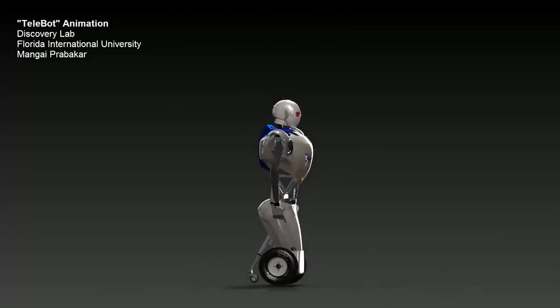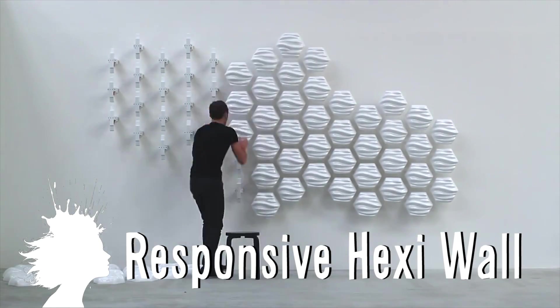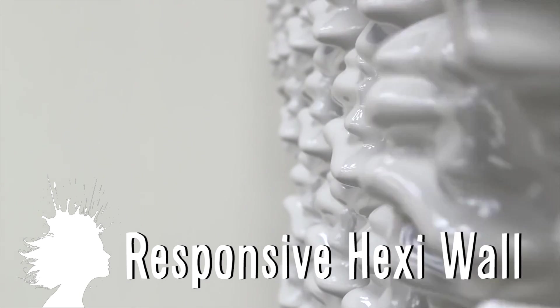The next step is developing the outer shell and doing field testing. Finally, here's a responsive hexi wall made up of 60 moving modules created by Thibbo.